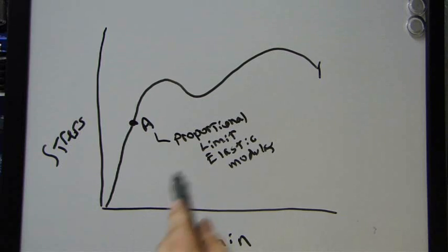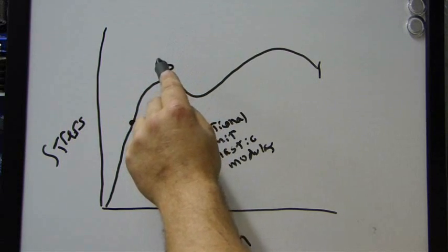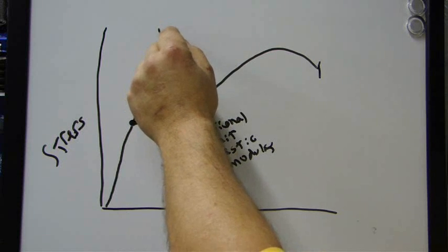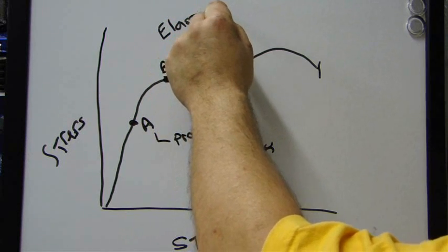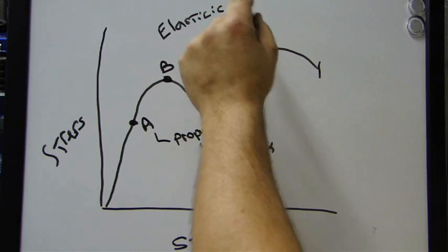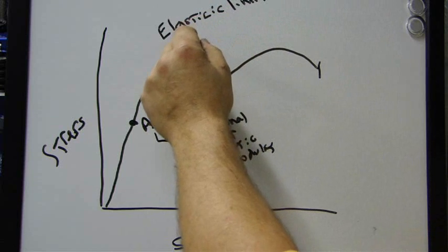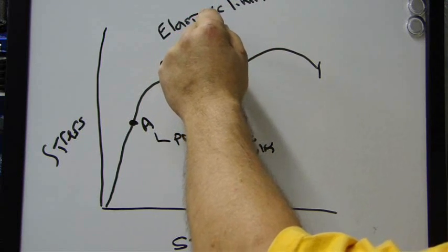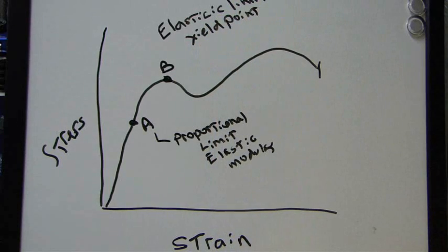The second point that's important is B, right here, we'll put B up there. This is the elastic limit of the material. And this is extremely important to understand what the elastic limit is. The elastic limit is also known as the yield point. The yield point of the material. And what's the difference?